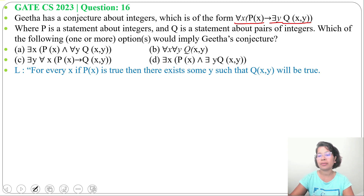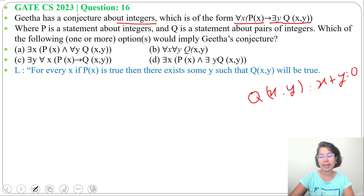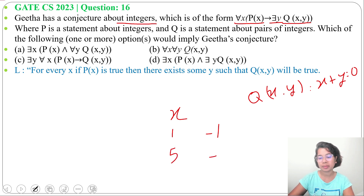You can take any example. Let P(x) be 'x is an integer' — here also it's written the domain is integers. And Q(x,y) as 'x plus y equals 0'. So for every x, let x equal 1, there is a minus 1 such that 1 plus minus 1 equals 0. For every x there is a y such that x plus y equals 0. Suppose x is 5, then there is a minus 5 such that 5 plus minus 5 is 0.